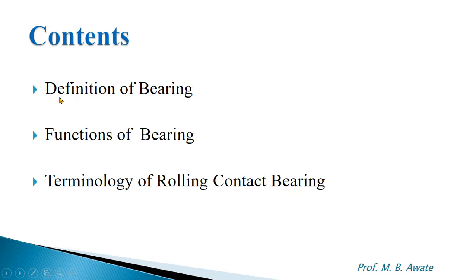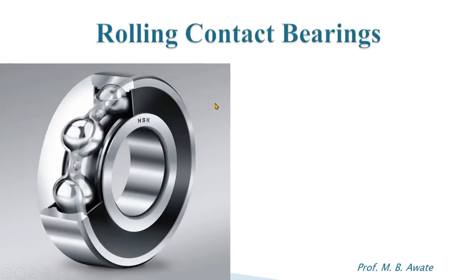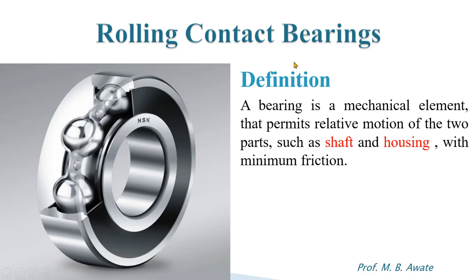We will start with the definition of bearing. This is the figure of rolling contact bearing. A bearing is a mechanical element that permits the relative motion of two parts such as shaft and housing with minimum friction. The main function of the bearing is to permit the relative motion between two parts.